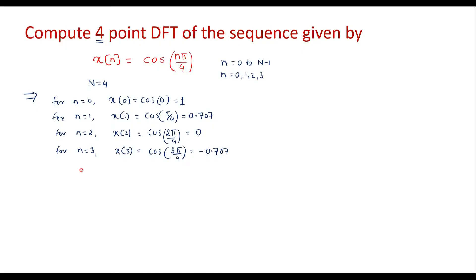So now the given sequence x(n) is represented as: for n=0, its value is 1; for n=1, its value is 0.707; for n=2, it is 0; and for n=3, it is −0.707. It is a good practice to represent an arrow mark indicating the first sample begins at n=0. So this is the discrete sequence x(n).